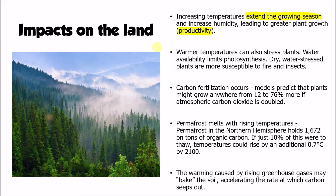However, we've also got to consider that warmer temperatures can actually cause stress to plants. Plants function best when the temperature doesn't become too extreme. Water availability is also very important because it is a limiting factor in photosynthesis. Where plants become dry or water-stressed, the photosynthesis rate decreases, and plants are also more susceptible to fire and to insects and disease. The increase in carbon dioxide in the atmosphere does cause plants to have a bit of a growth spurt — we call this carbon fertilisation.